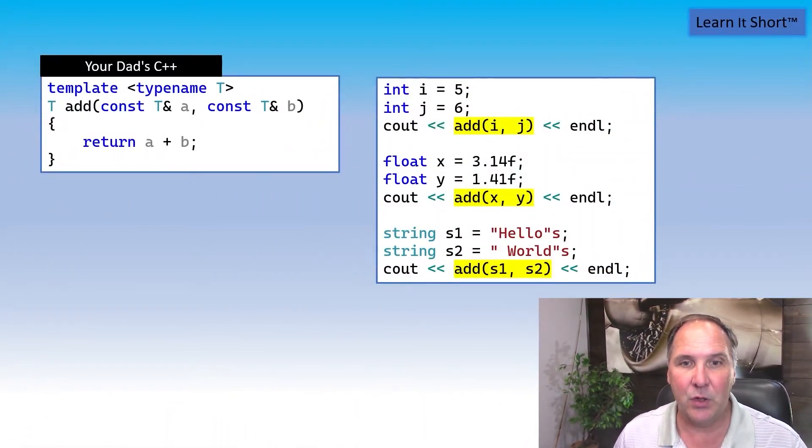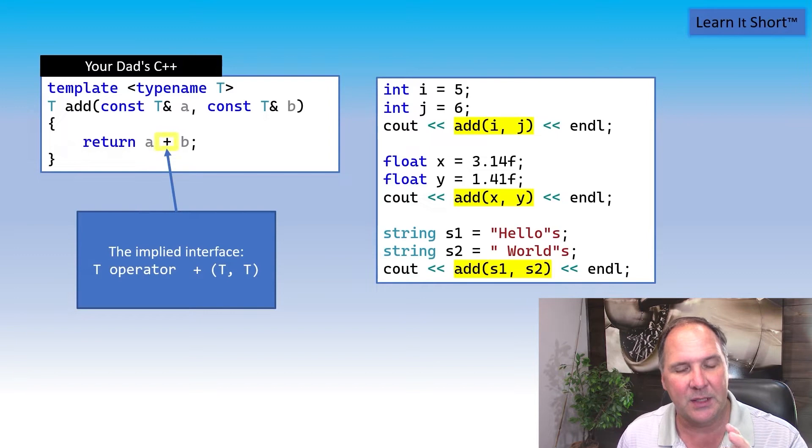In your dad's C++, you would define a template with the template keyword and a bunch of clunky angle brackets. There is an implied interface with templates that's not always quite obvious. In this template, we're expecting that the two arguments can be added together with the plus sign. So we can pass in integers and floats and strings even.